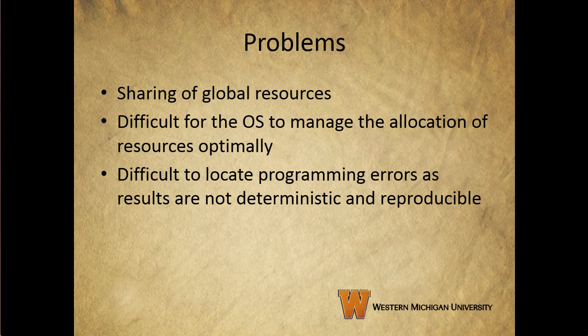Another problem is that it's difficult for the OS to manage the allocation of resources optimally. If a process requests use of a particular input-output channel and is then suspended before using it, it might not be best for the OS to lock the channel and prevent its use by other processes — this could lead to deadlock, which we'll cover in Chapter 6. Finally, it becomes very difficult to locate programming errors because results are typically not deterministic and easily reproducible. These difficulties exist in both uniprocessor and multiprocessor systems.